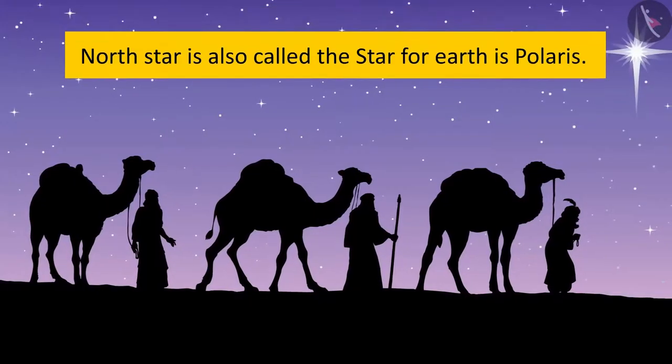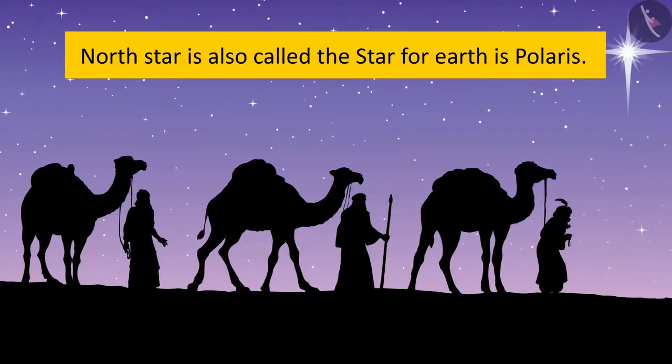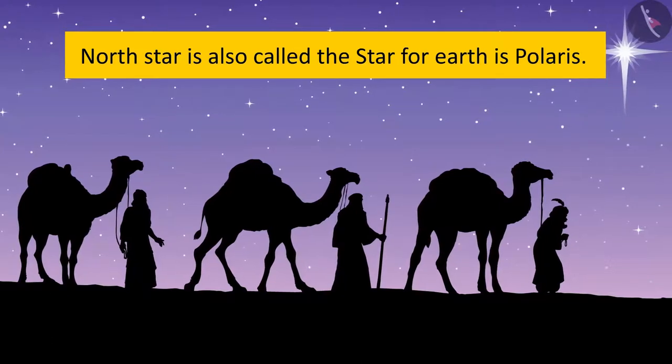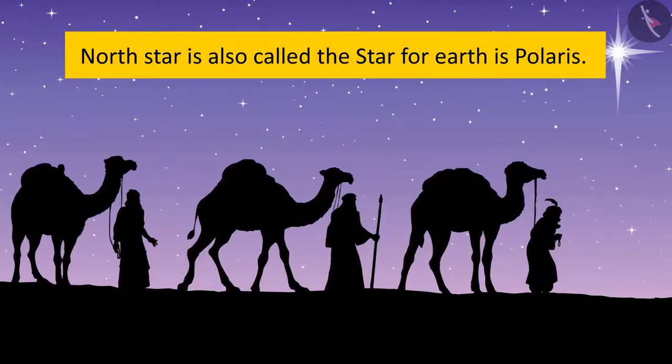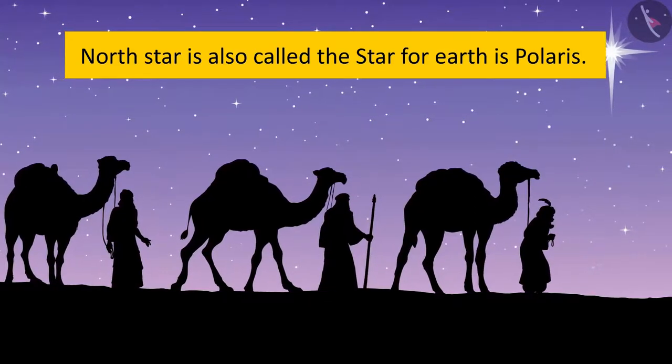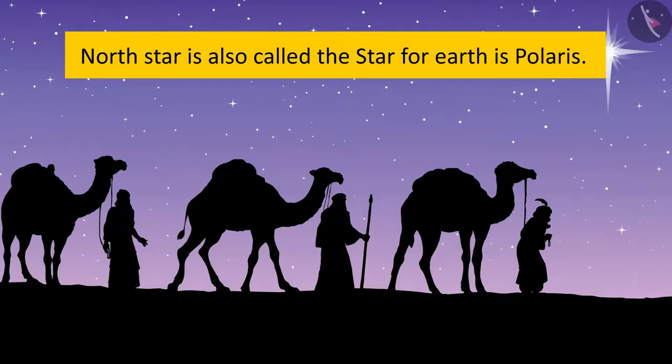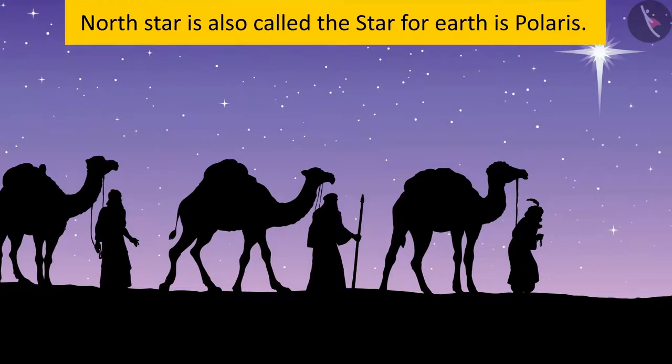The North Star changes in the vast time period of the Earth. The star that is called the North Star for Earth is Polaris. After 20 to 25,000 years, when the Earth wobbles a bit and shifts its axis, Vega will be the next North Star.